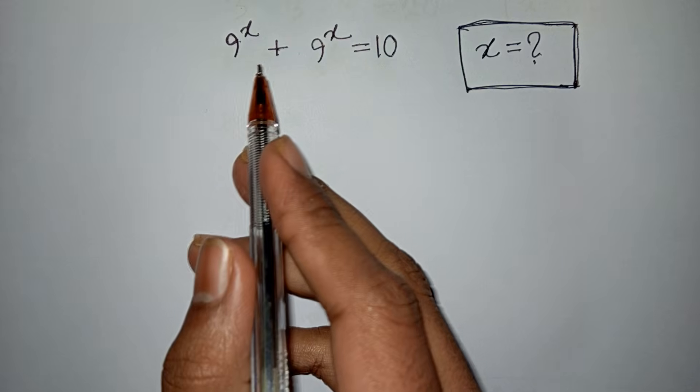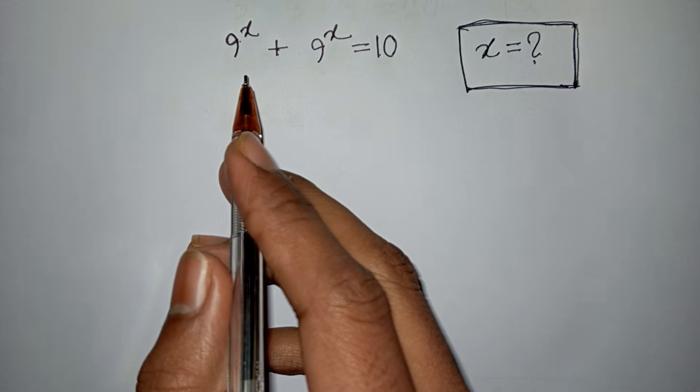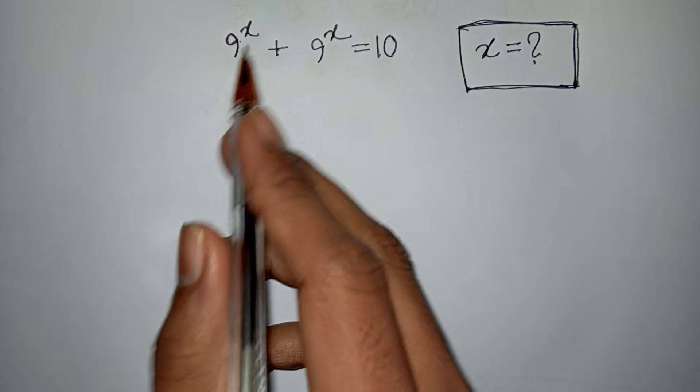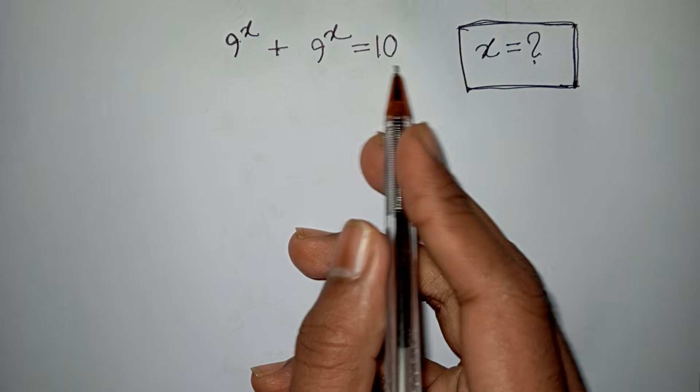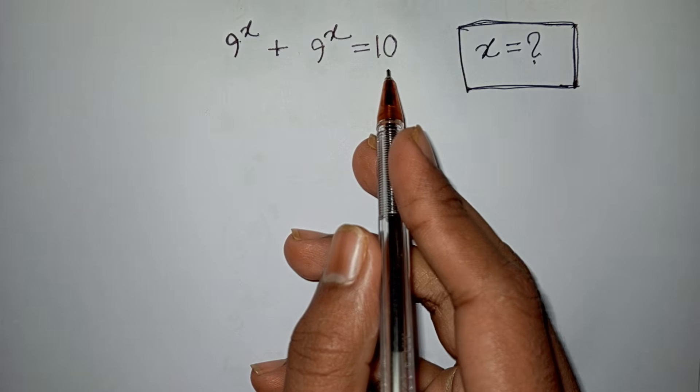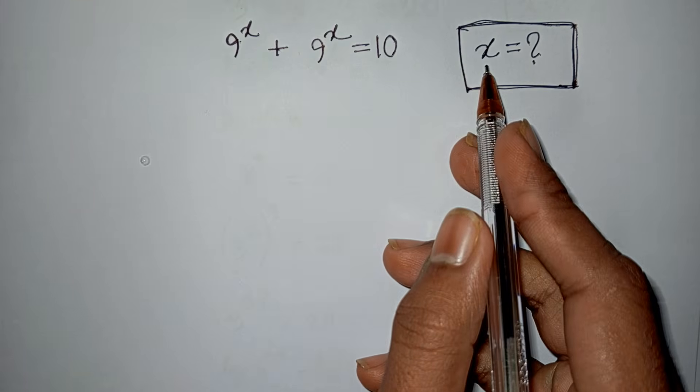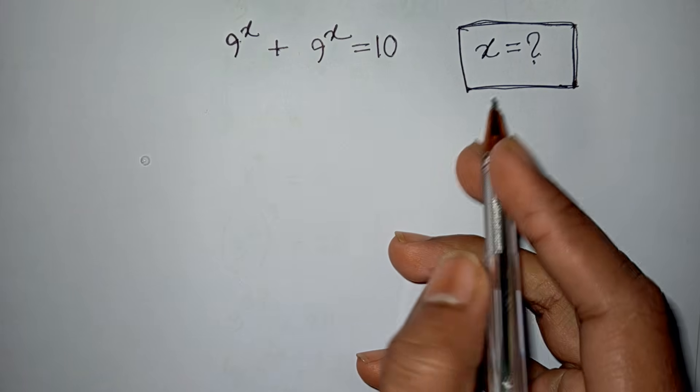How to solve this nice exponential equation: 9 to the power x plus 9 to the power x is equal to 10. What is the value of x?